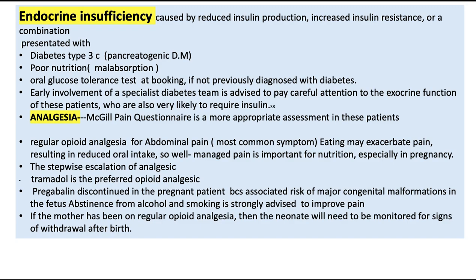For analgesia in chronic pancreatitis, regular analgesics for abdominal pain are most important as eating may exacerbate pain, resulting in reduced oral intake. Well-managed pain is important for nutrition, especially in pregnancy. The McGill pain questionnaire is a more appropriate assessment tool for these patients. Tramadol is the preferred opioid analgesic. Pregabalin, if taken before pregnancy, should be discontinued as it is associated with major congenital malformations. Abstinence from alcohol and smoking is strongly advised. If the mother has been on regular opioid analgesics, the neonate must be monitored for signs of withdrawal after birth.